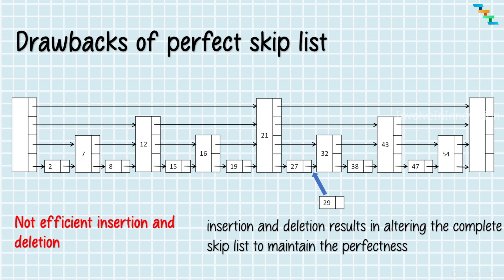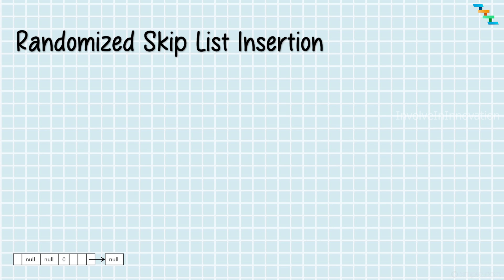But there is a major flaw: if you want to add or delete an element from the skip list, it is difficult because maintaining the skip list after adding or deleting an element is costly and time-consuming, since we need to alter the skip list completely. For example, to add element 29, the whole skip list needs to be altered. Similarly, deleting element 21 requires altering the entire skip list to maintain its perfectness. So what is the solution? Instead of a perfect skip list, we can use a randomized skip list.